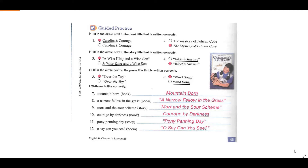Your assignment for a grade is to do page 46. On the 'Apply and Write' section at the bottom, you need to pick a book and a story that you've read or liked and write it correctly. Make sure you underline the name of the book and put quotation marks around the name of the story. Okay, that's all for today.